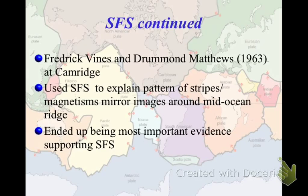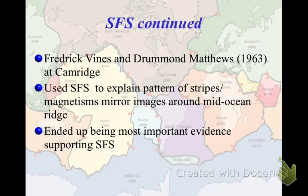The next big advance for seafloor spreading and plate tectonics came from two scientists named Frederick Vine and Drummond Matthews — these guys are heavy hitters. They used a relatively new device, a magnetometer, and dragged it behind a boat. They found patterns of stripes of different magnetism — positive, then negative, then positive, then negative — centered around mid-ocean ridges, and they were perfect mirror images of one another. They used seafloor spreading to explain these stripe patterns in the framework of new crust being made and set to whatever the current polarity was at the time, with crust made on one side of the ridge also being made on the other. This ended up being the single most important piece of evidence supporting seafloor spreading.